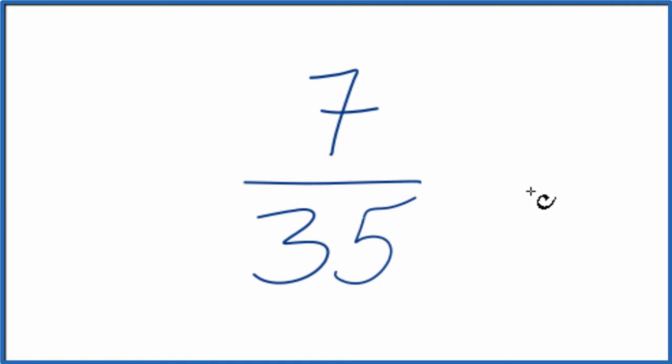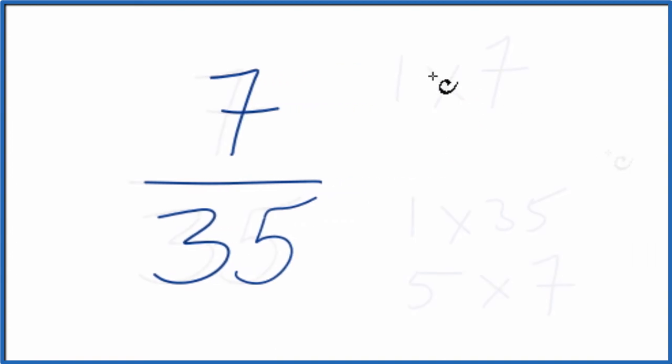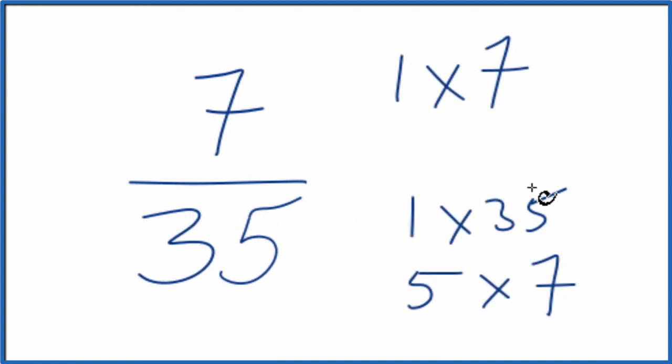To do that, we need to find a factor that goes into both 7 and 35 evenly. We're looking for a common factor of 7 and 35. So we could write the factors for 7 and 35, and you can see the greatest common factor is 7.